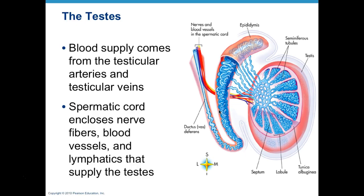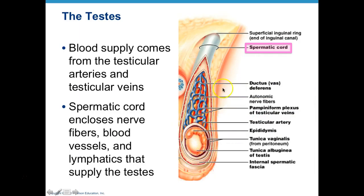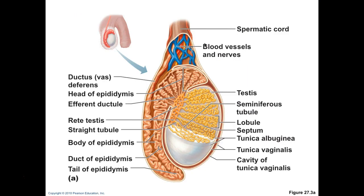Blood supply comes from the testicular arteries and testicular veins within the spermatic cord. The spermatic cord is filled with arteries, veins, nerves, and lymphatic vessels to supply the testes, epididymis, and ductus deferens, which also travels within the spermatic cord. This includes autonomic nerve fibers, the pampiniform plexus of the testicular veins, and the testicular artery.